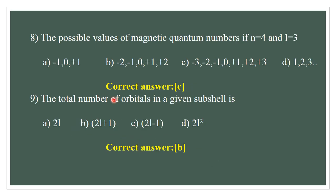Question number 8. The possible values for magnetic quantum number when n = 4 and l = 3. The possible magnetic quantum numbers are: -3, -2, -1, 0, +1, +2, +3. The correct answer is C.